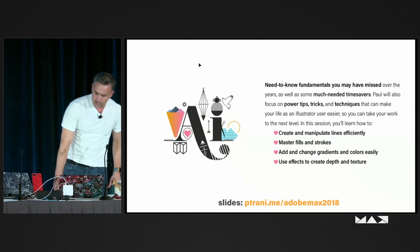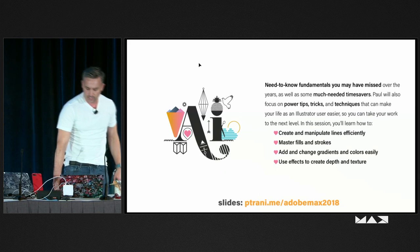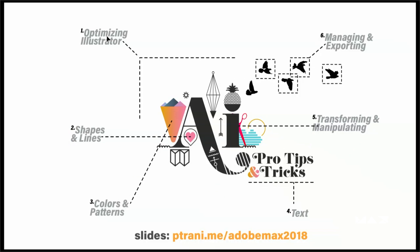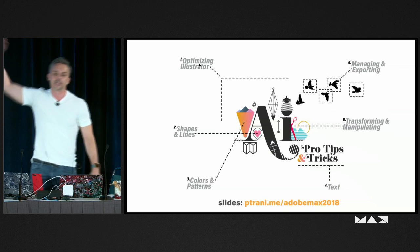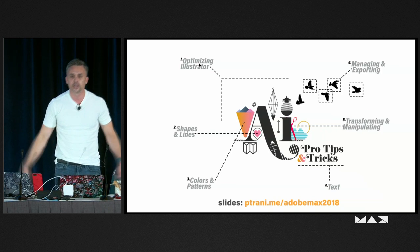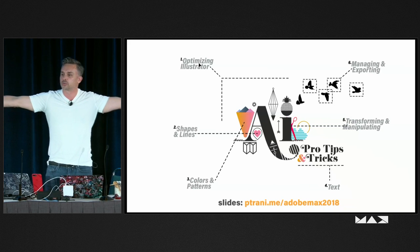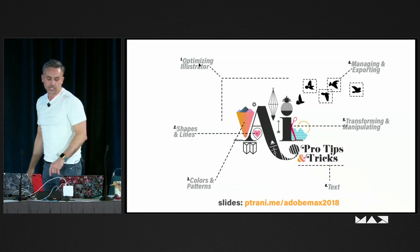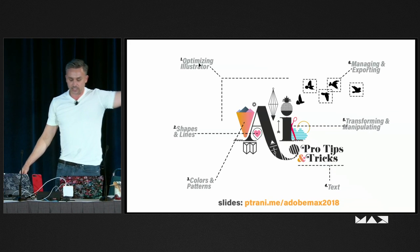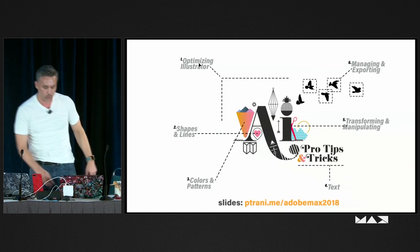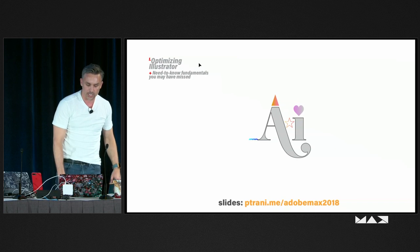These are all the need-to-know fundamentals you may have missed — time savers. I'm going to talk about optimizing Illustrator and the stuff you should know that you might have missed. We'll dive into shapes and lines, colors and patterns. It's a product that's 31 years old, and even in this room we have varying levels of experience. We'll also get into text, transforming and manipulating, and then exporting content.